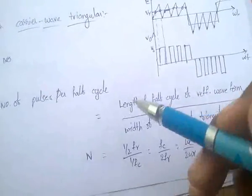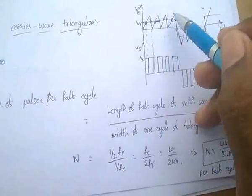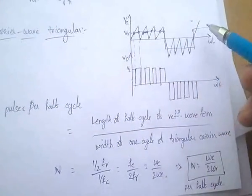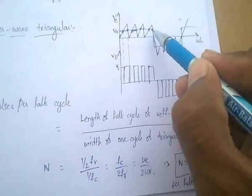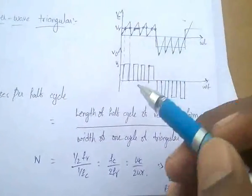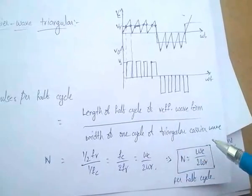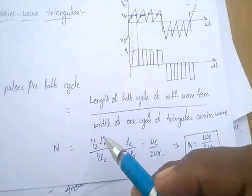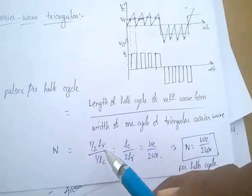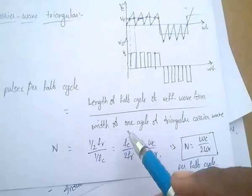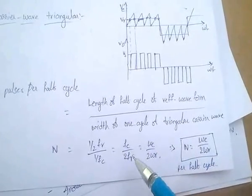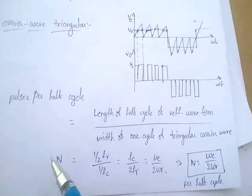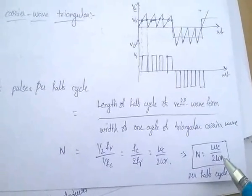The number of pulses for every half cycle equals the length of the half cycle of the reference waveform divided by the width of one cycle of the triangular carrier wave. That is (1/2FR) divided by (1/FC), which gives FC/(2FR), or equivalently ωC/(2ωR). So the number of pulses per half cycle N equals ωC/(2ωR).